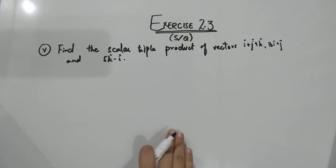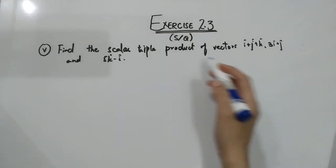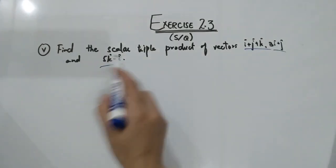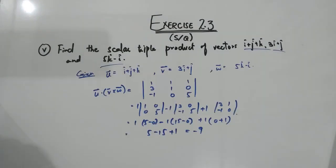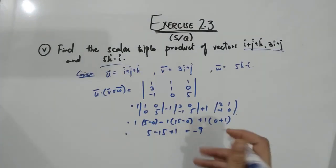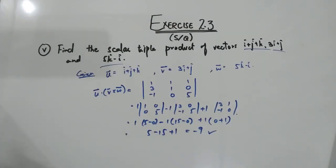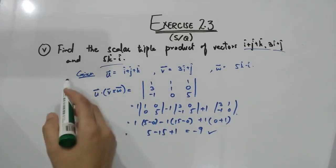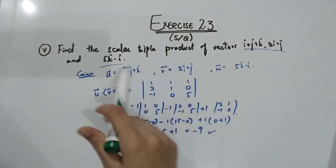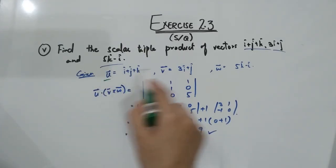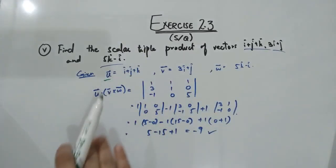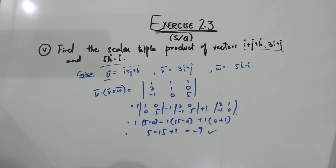In part number five, you have to find the scalar triple product of three given vectors. Writing them in determinant form and expanding gives the answer minus nine. Before every answer, the vectors are labeled U, V, W only for presentation — it looks good when solving on paper.